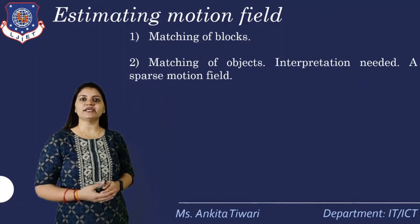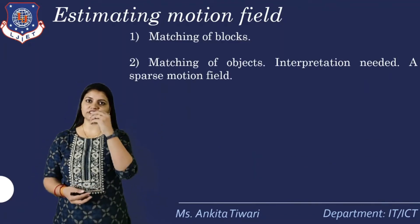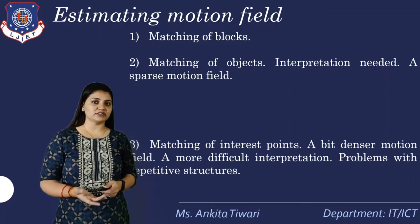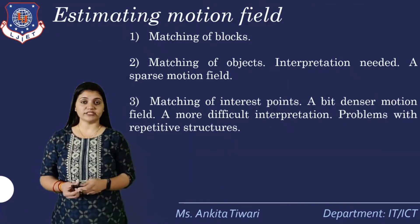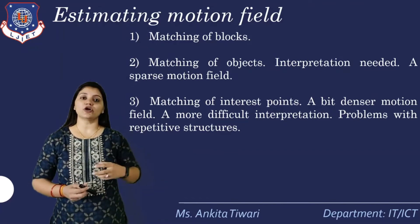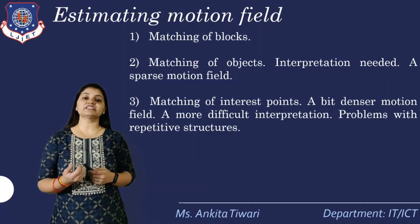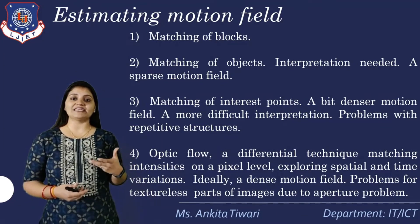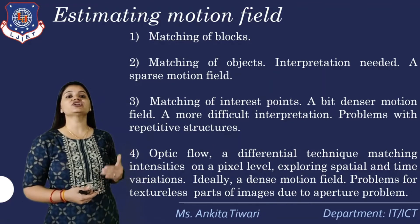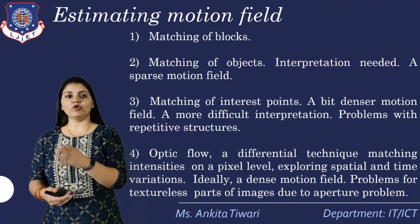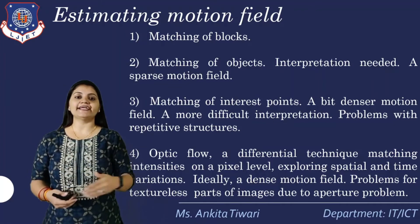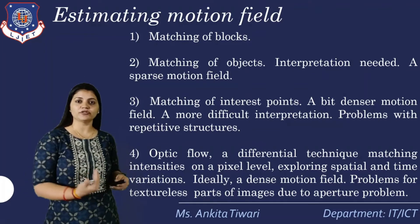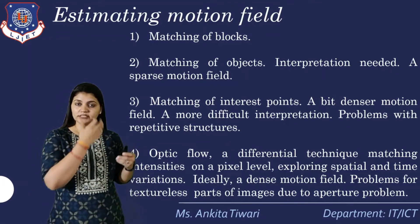How do we estimate the motion field? First, matching of blocks — correlation-based tracking. Second, matching of objects, which requires interpretation and gives a sparse motion field. Third, matching of interest points, which gives a denser motion field but is more difficult to interpret and has problems with repetitive structures. We also have optical flow, which is a differential technique matching intensities at the pixel level, exploring spatial and time variations, ideally giving a dense motion field, though with problems for texture-less parts due to the aperture problem.